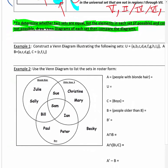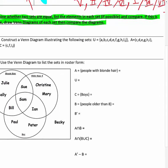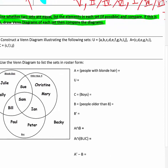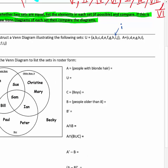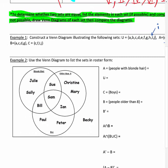Example one says: construct a Venn diagram illustrating the following sets. The universal set has A, B, C, D, E, F, G, H, I, J. Set A has C, D, E, G, H, I. Set B has A, C, D, G. And set C has C, F, I, J.